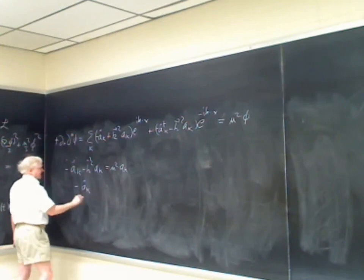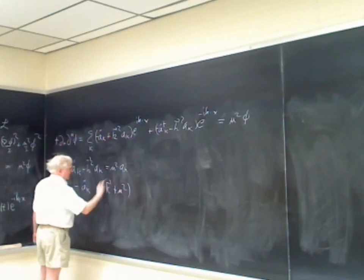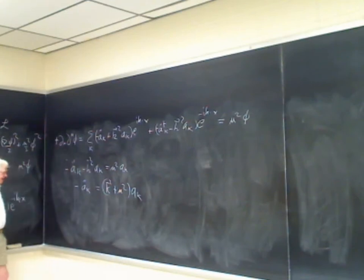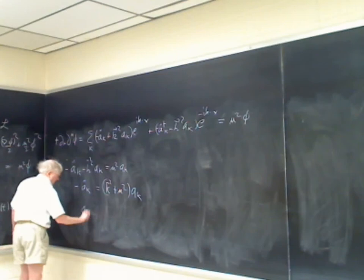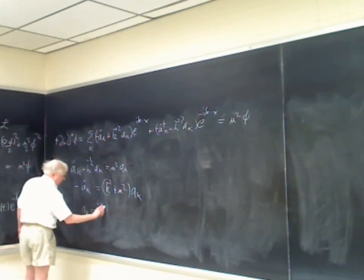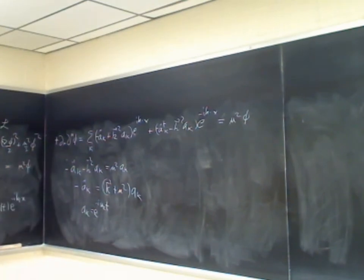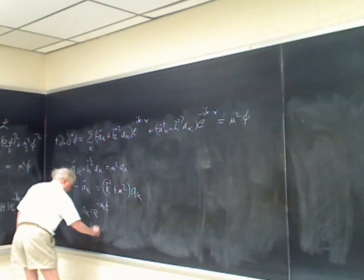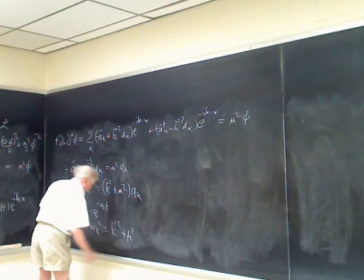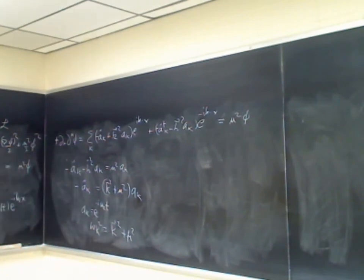We find that −ä_k = (k² + μ²) a_k, which means a_k(t) = e^{-iω_k t} times a constant, where ω_k² = k² + μ². That's our expression for the energy.